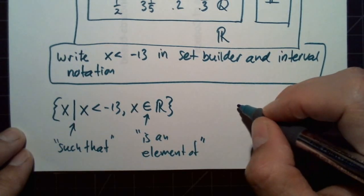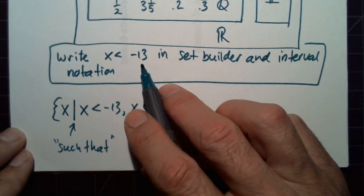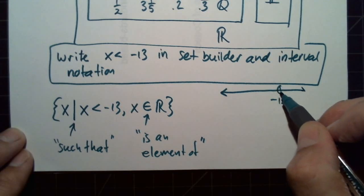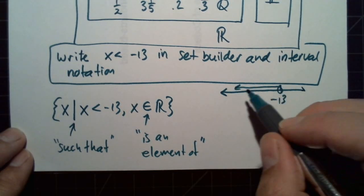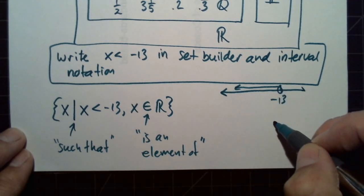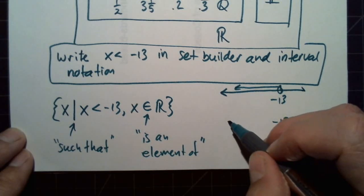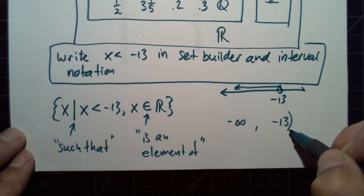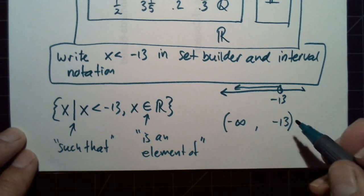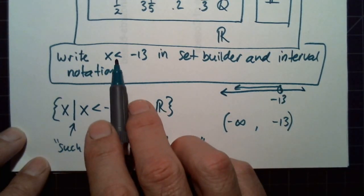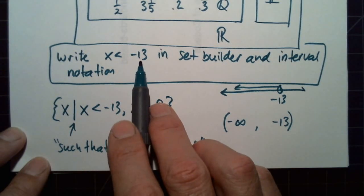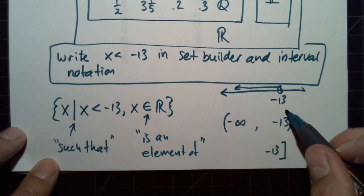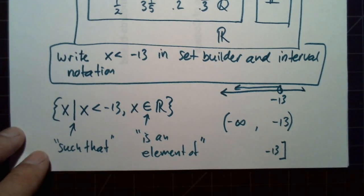Then we have interval notation — think of a number line. If we're at negative 13 and we want to go to the left, the right endpoint is negative 13, the left has no endpoint so we say negative infinity. We use either a parenthesis or a bracket. Infinities always have a parenthesis. If it was less than or equal to, we'd use a bracket, meaning we include negative 13. A parenthesis means we don't include negative 13.